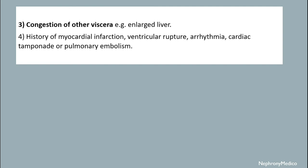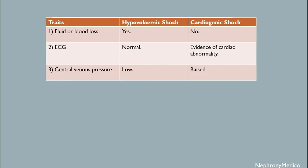Other findings include condition of viscera like an enlarged liver, and a history of myocardial infarction, ventricular rupture, arrhythmia, cardiac tamponade, or pulmonary embolism. The difference between hypovolemic shock and cardiogenic shock: a history of fluid or blood loss is present in hypovolemic shock but not in cardiogenic shock.